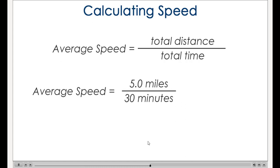To make this conversion, we will multiply by a conversion factor of 60 minutes over one hour. Now when we calculate speed using the conversion factor, we get 10 miles per hour.